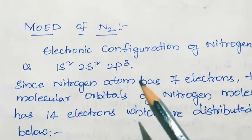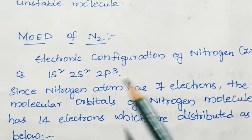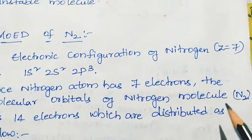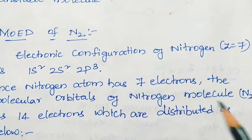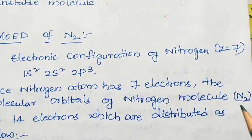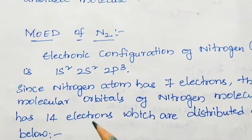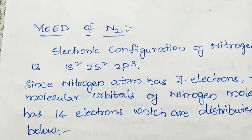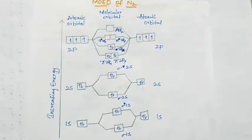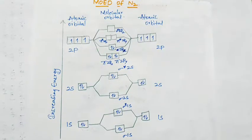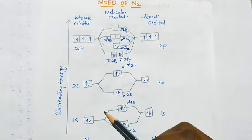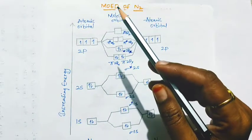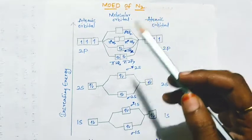Since nitrogen atom has 7 electrons, the molecular orbitals of nitrogen molecule have 7 plus 7, that is 14 electrons, which are distributed as below. This is the molecular orbital energy diagram of nitrogen molecule.